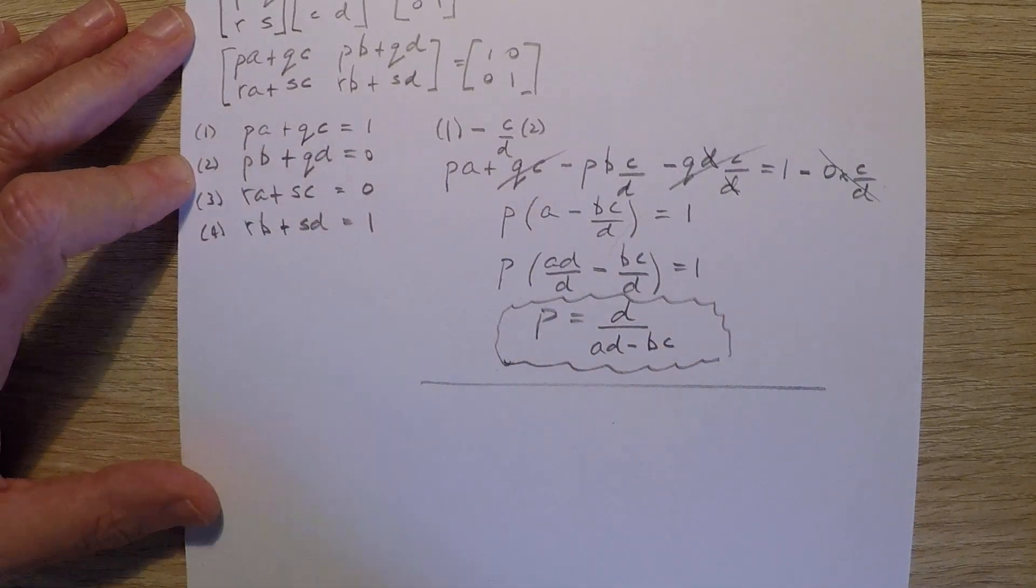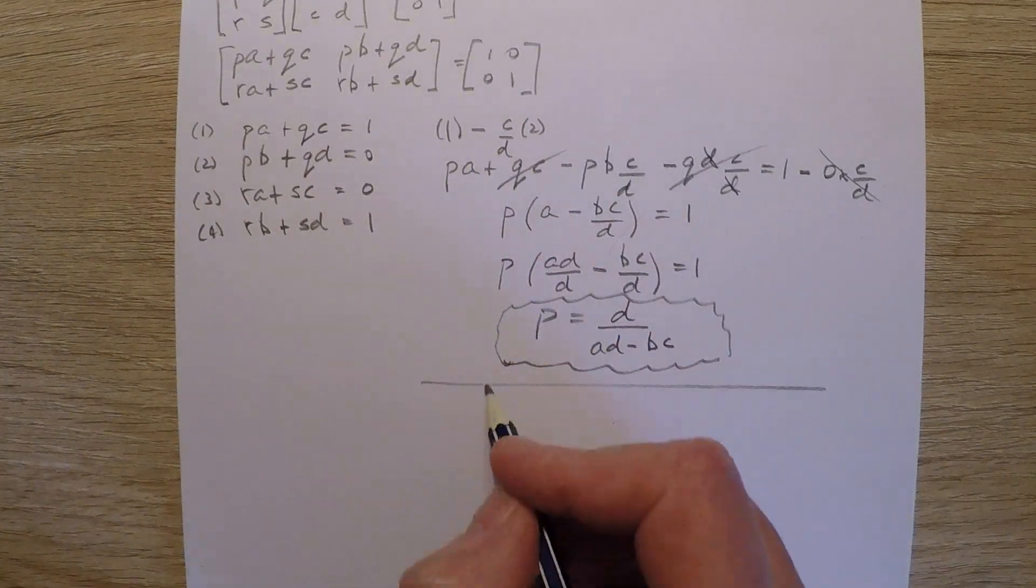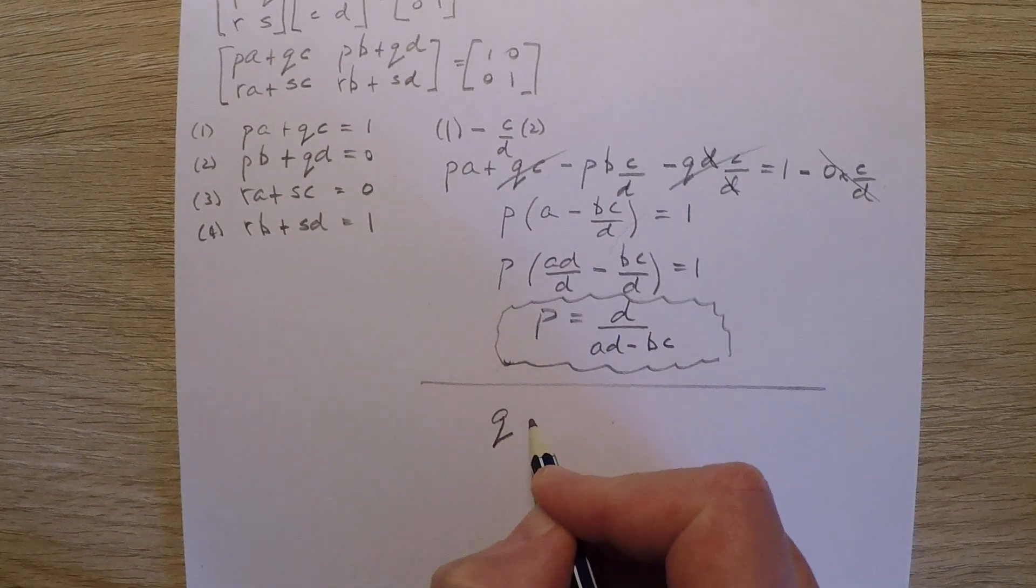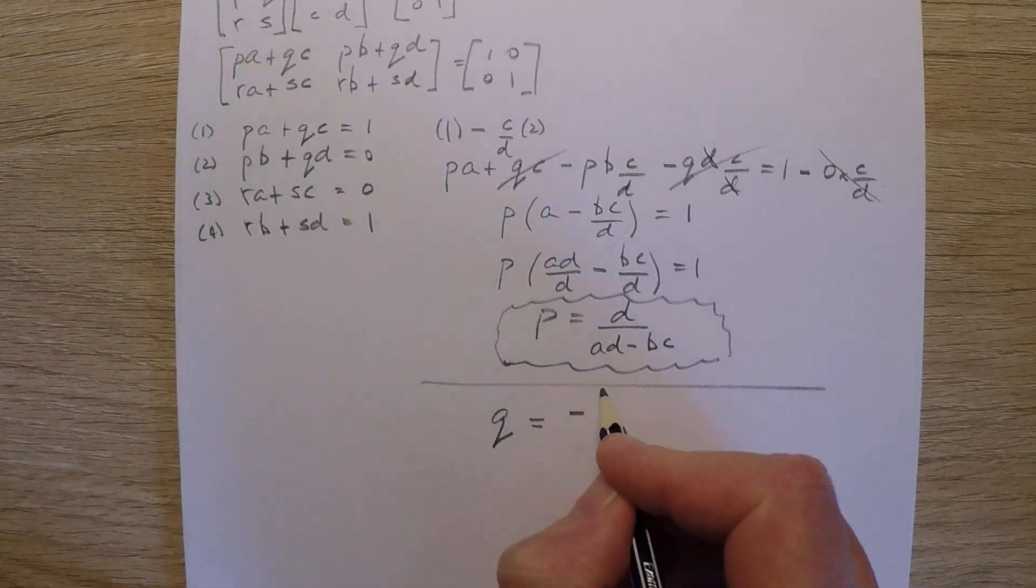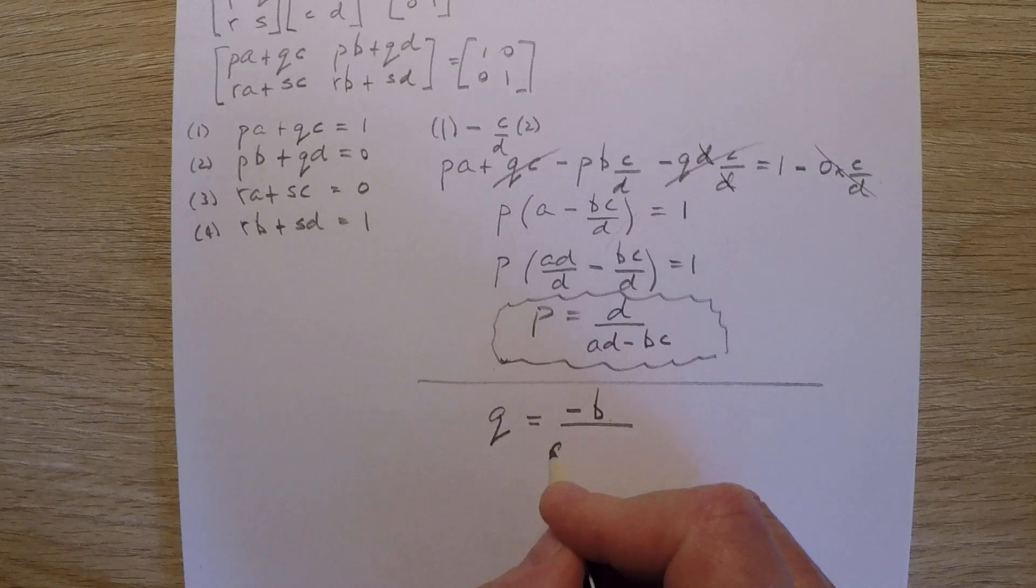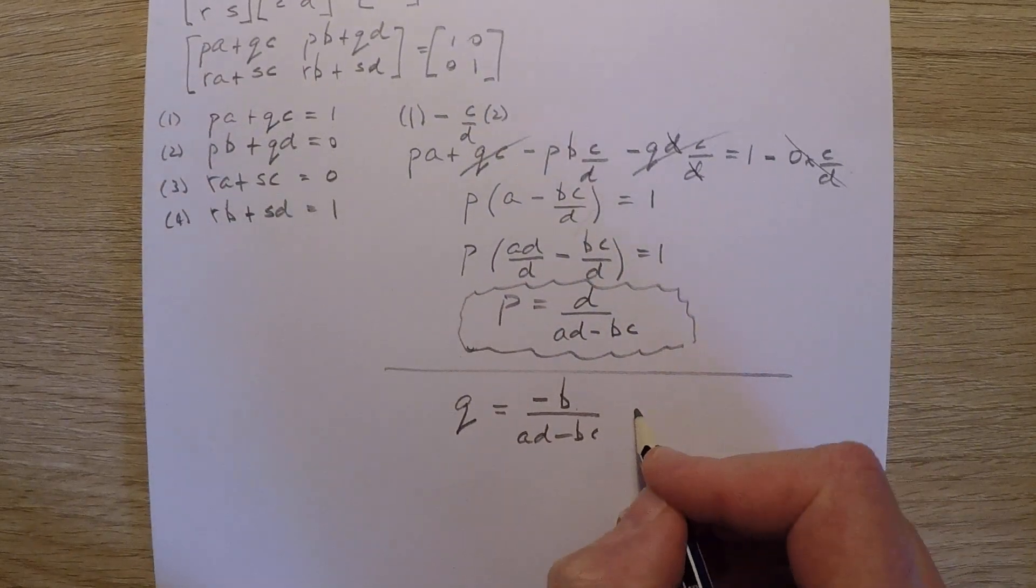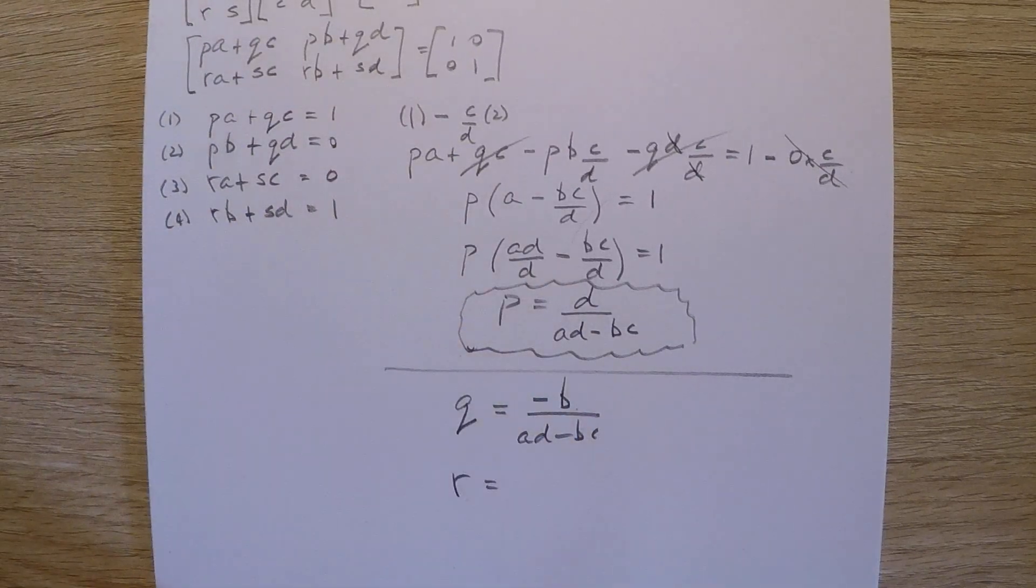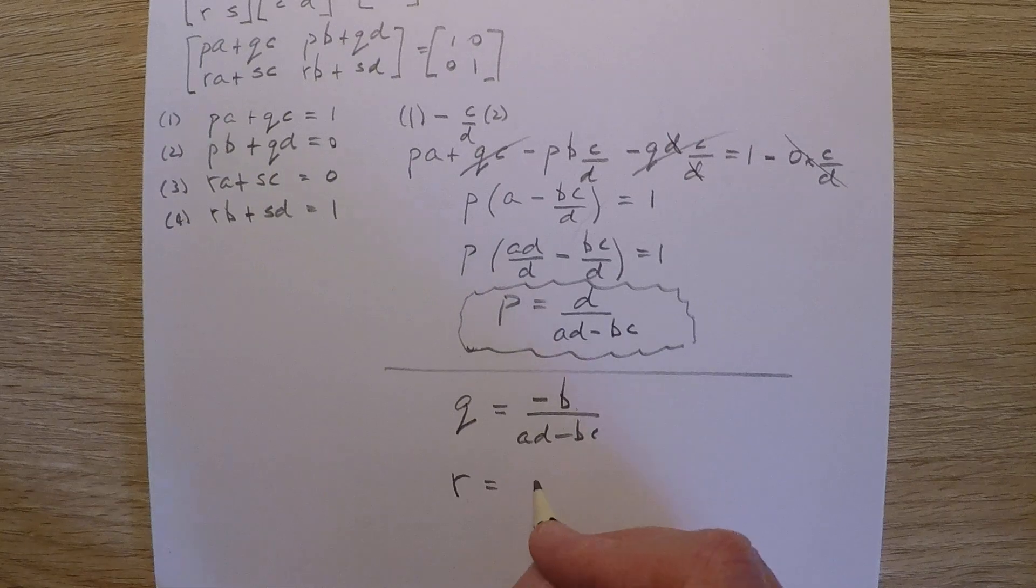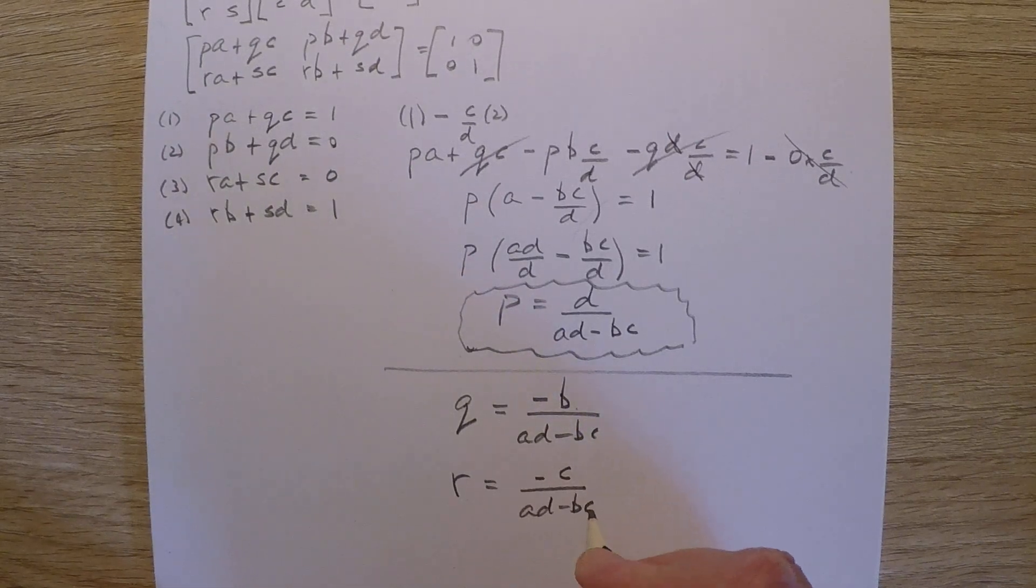And what does the result turn out to be? Well, without showing all the details, it's the same process. It turns out that Q is equal to negative B over AD minus BC. It turns out that R is equal to negative C over AD minus BC.